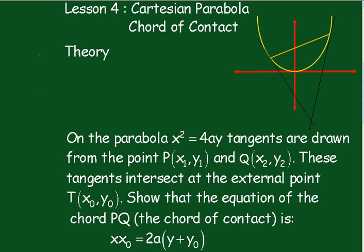Lesson 4: Cartesian Parabola, Chord of Contact. Theory on the parabola x squared equals 4ay.